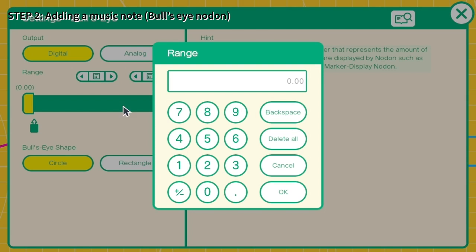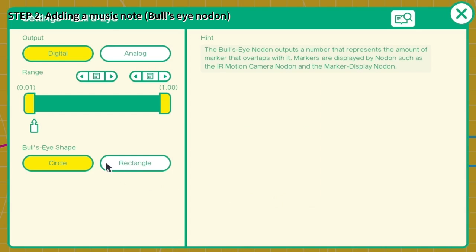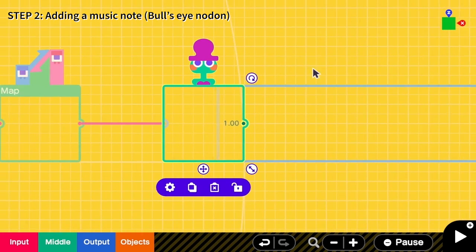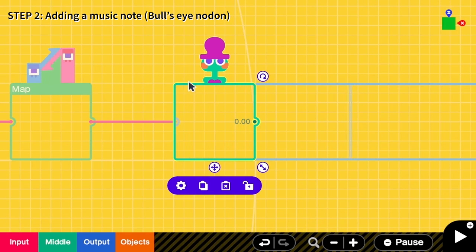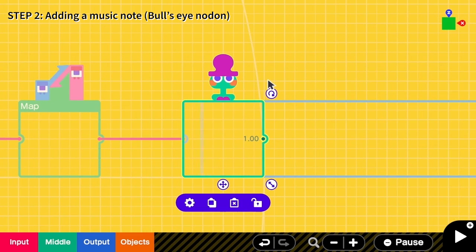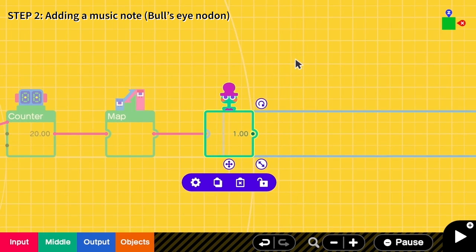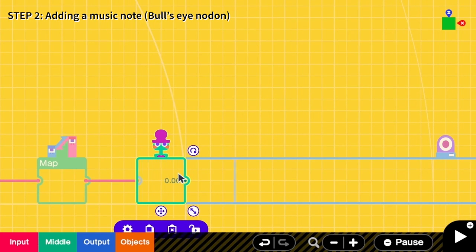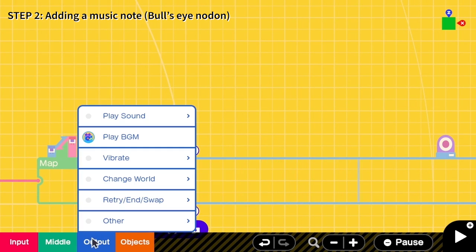And the range I change the minimum to be 0.01, and the shape is rectangle. So here you can see that when the marker is on this bull's eye the value is 1, but when the marker has left the bull's eye the value becomes 0. And when it is 1 we want to play some music. So we go to output and then play sound, play instruments.